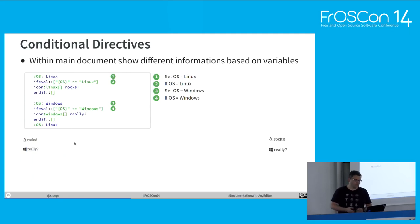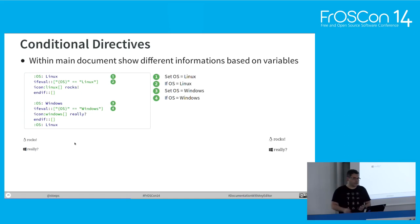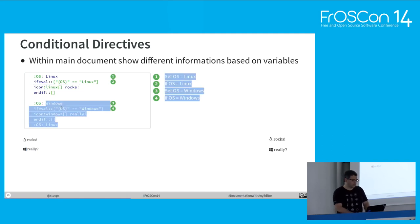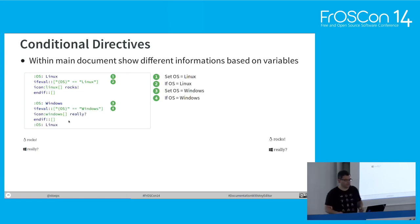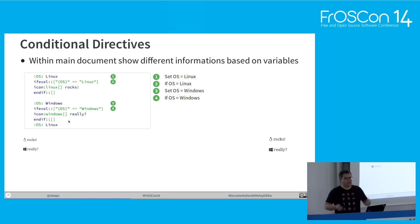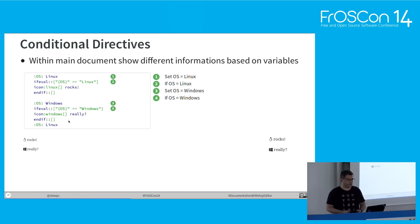Conditional things: when the operating system is Linux, check if the variable is Linux and print out a Linux icon and 'rocks.' When it's defined as Windows, just 'really.' We see the output at the bottom — Tux and 'rocks' and the Windows sign and 'really.' So you can say that part of the documentation is only for that operating system and the other part for other ones — and that can be whole large parts, not only some lines.